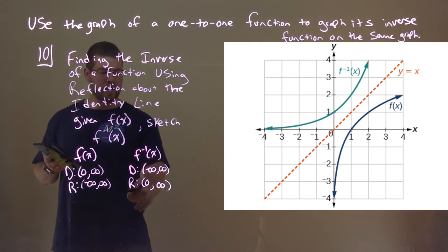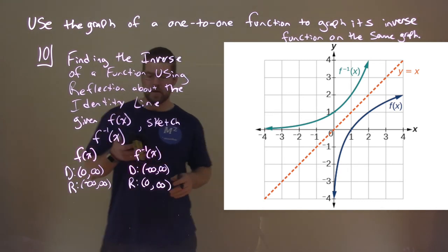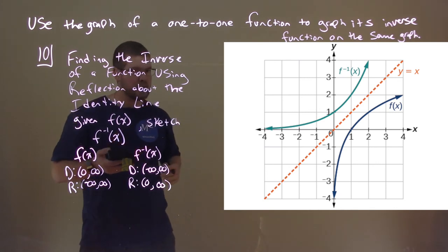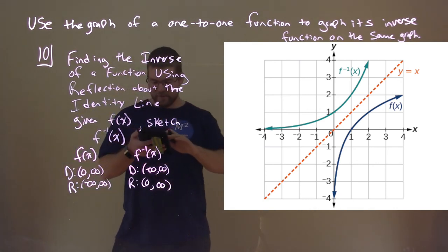The domain of f of x is the range of inverse of f of x, and the domain of inverse f of x is the range of f of x right there. So that's how you can graph a line, you can kind of see it there over the identity line, and you define the inverse there.